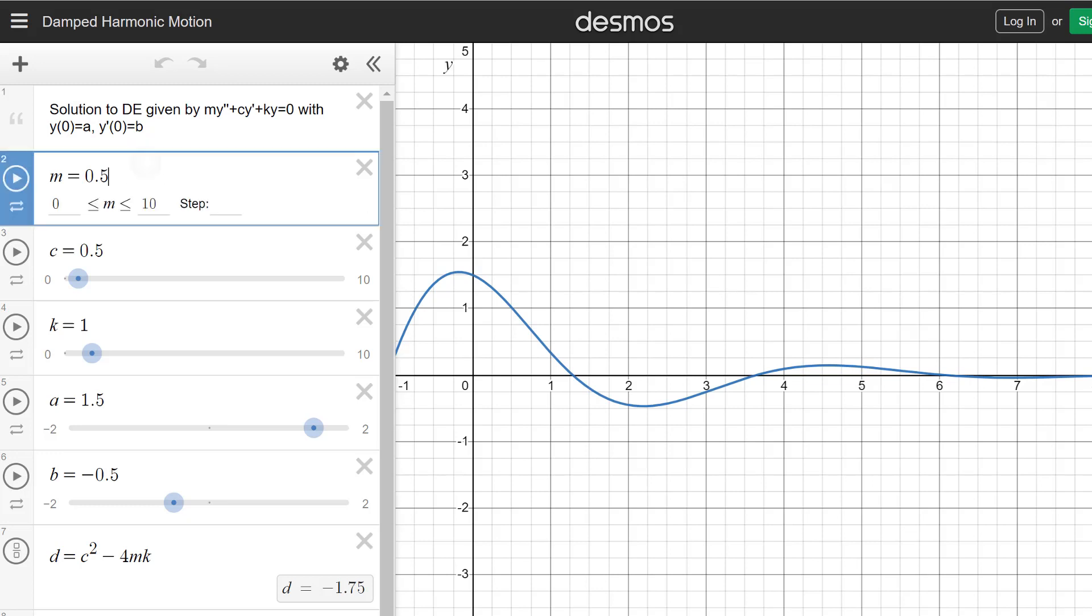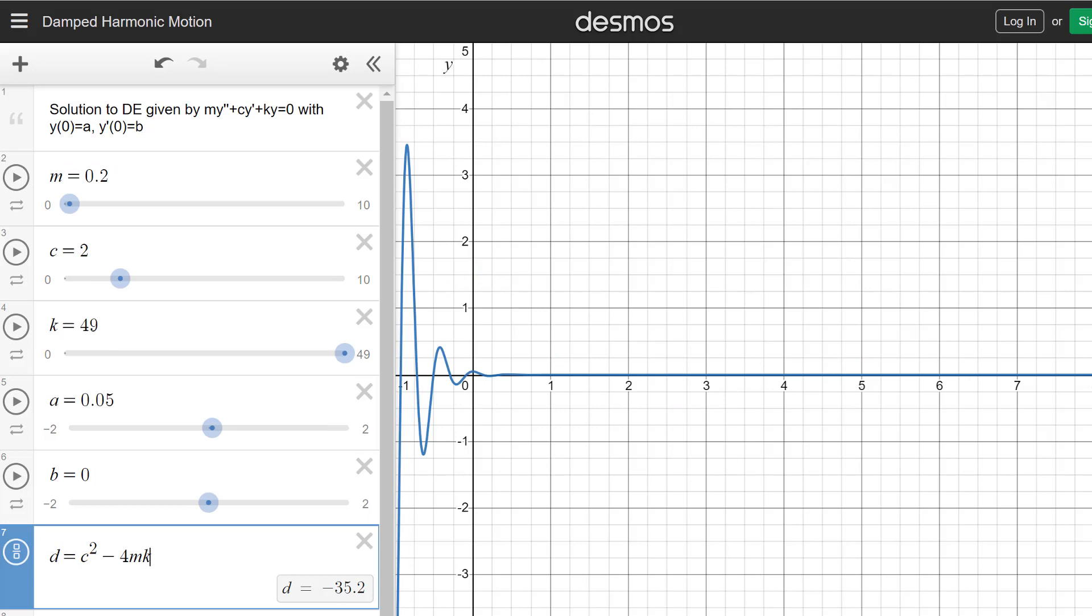So I'm going to go ahead and type those numbers and then restart the video after I've typed the numbers for the problem we are working on. Okay, so I've typed in our m, c, k, and initial position and initial velocity values here.